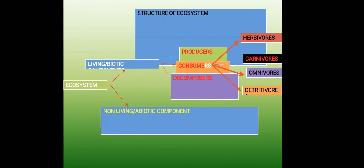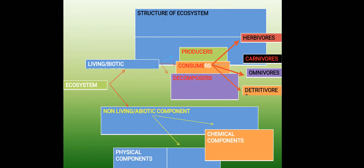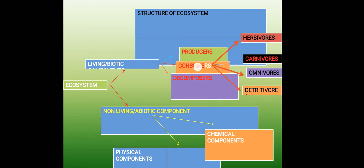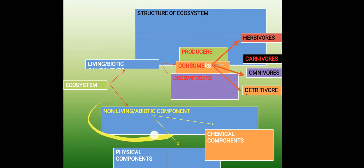The next component is the non-living, abiotic component, which includes two sub-components: physical components and chemical components. To summarize, the structure of an ecosystem is of two types — biotic and abiotic. Biotic includes three types: producers, consumers, and decomposers. Consumers are of four types: herbivores, carnivores, omnivores, and detrivores. Non-living abiotic components include physical and chemical components.